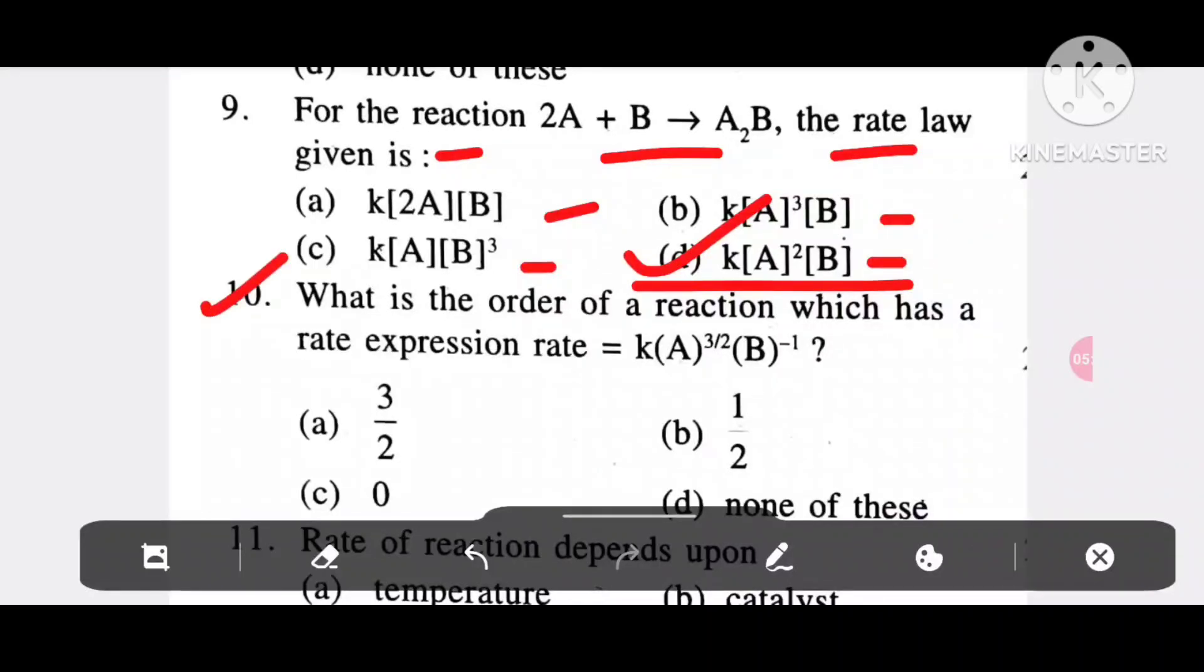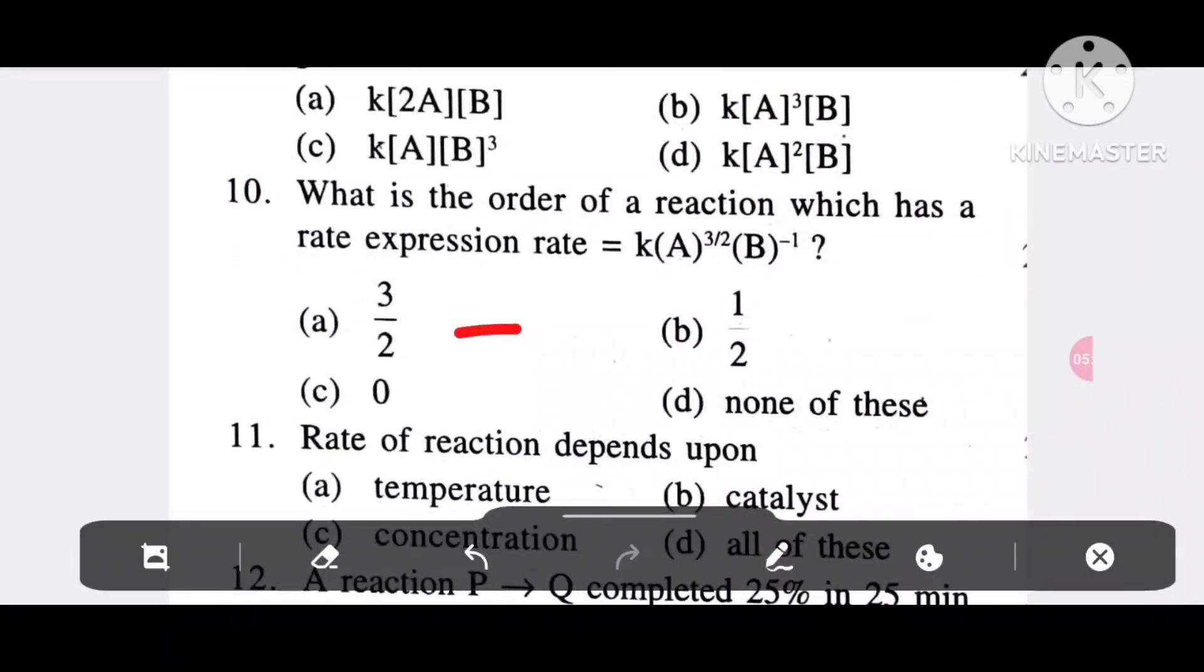Question 10: What is the order of a reaction which has rate expression rate = k[A]3/2[B]-1? Option A, 3/2; option B, 1/2; option C, 0; option D, none of these. It is option B, 1/2.